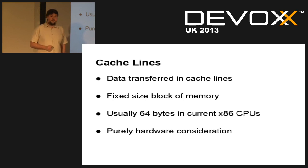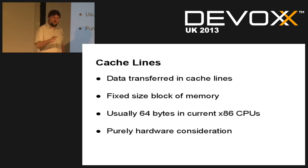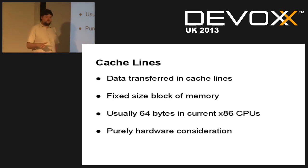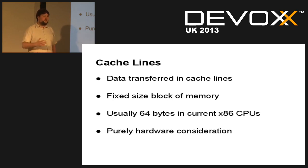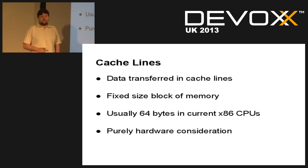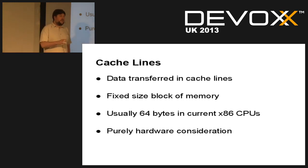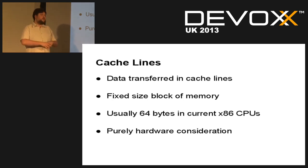Data is transferred in cache lines — the atomic unit of data coming into your cache. It doesn't come in smaller or bigger; if something doesn't fit in one cache line, you bring in multiple. It's a fixed-size block: modern chips are 64 bytes. It's purely a hardware consideration — you can't tell your CPU which cache line to load directly. If you want to affect caching behavior, you have to do it indirectly through memory layout, data layout, and access alignment.